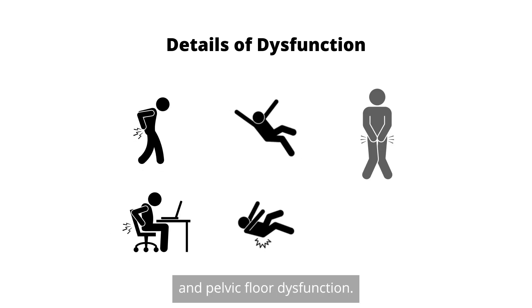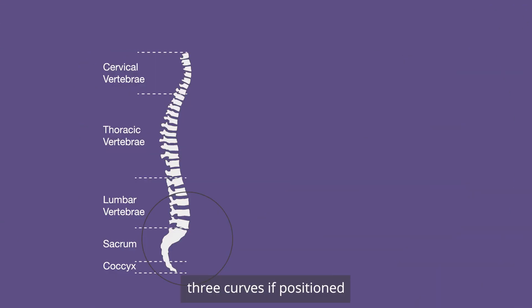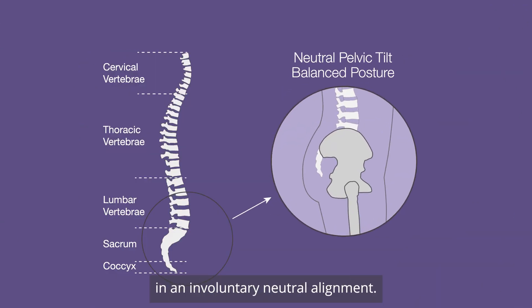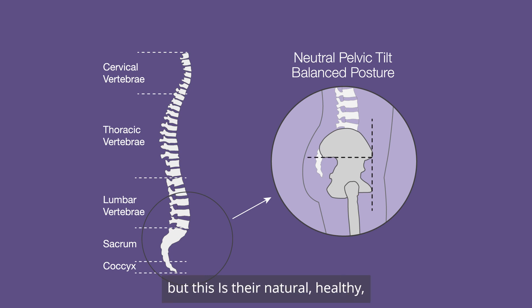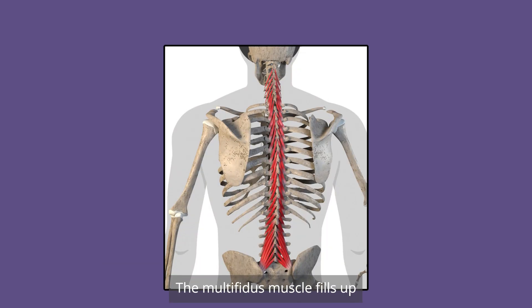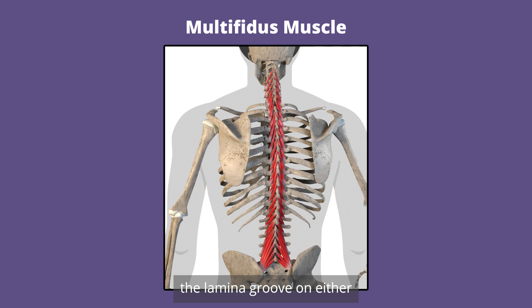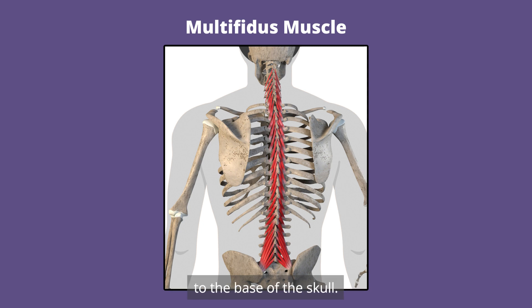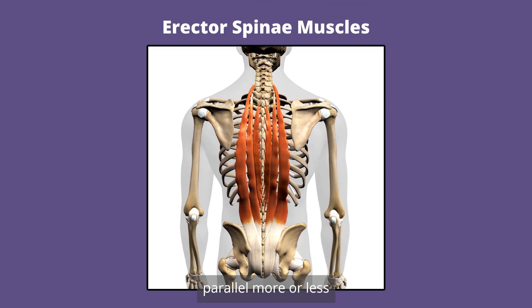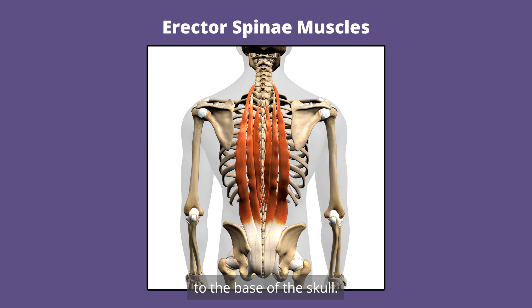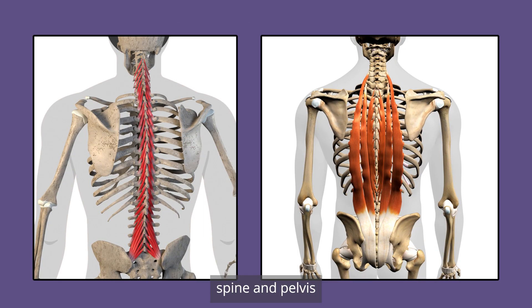Now let's get into the details of back, balance, and pelvic floor dysfunction. A healthy spine has three curves if positioned in an involuntary neutral alignment — involuntary meaning a person does not hold their posture, but this is their natural healthy spinal posture. The multifidus muscle fills up the lamina groove on either side of the spinous processes of the vertebrae from the sacrum to the base of the skull. The erector spinae is a group of muscles which run parallel the length of the spine on the left and right, from the sacrum to the base of the skull.